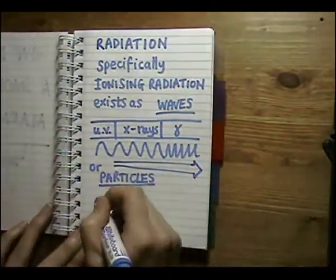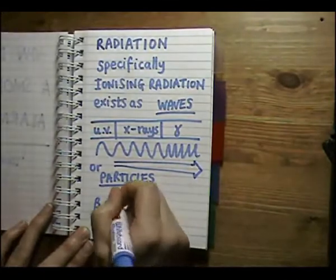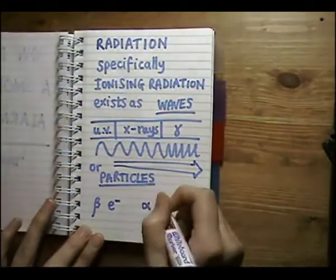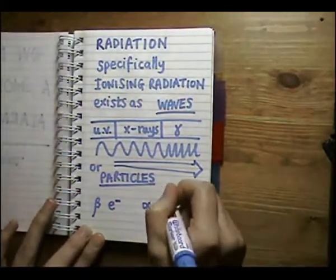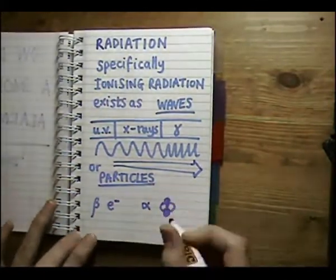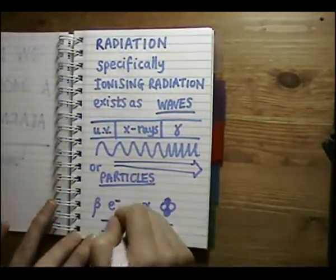In fire alarms, alpha particles are what do all the hard work. They ionise the air.